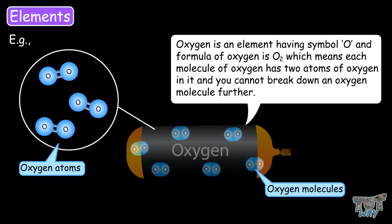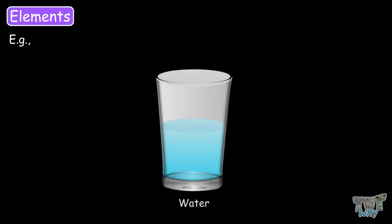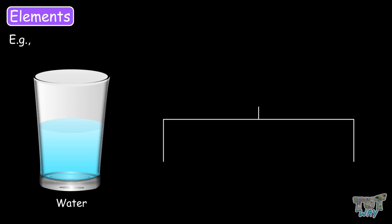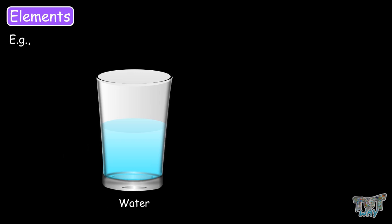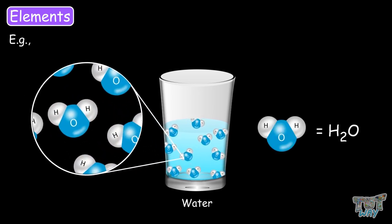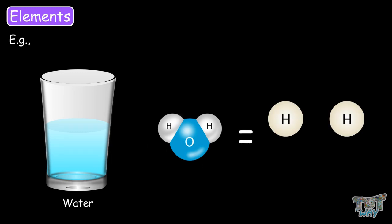And you cannot break down an oxygen molecule further. Another example is water. Water is made up of two elements — oxygen and hydrogen — and each water molecule is denoted as H2O, which means each water molecule has two atoms of hydrogen and one atom of oxygen. So now we know water elements.